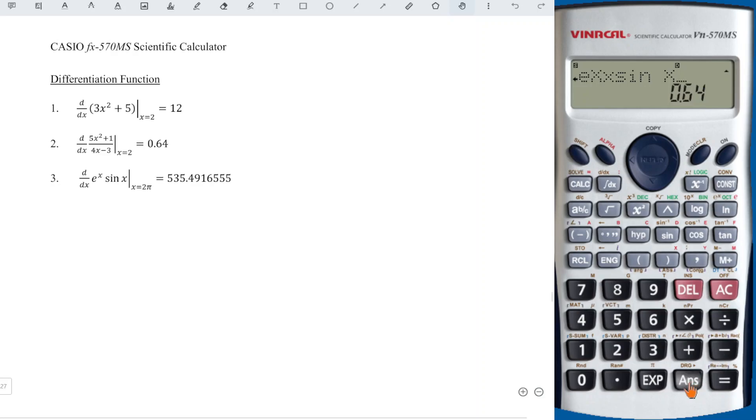Press Shift, answer, and we choose radian number 2. Press comma to input the point. So we have shift exponent, pi. And press equal. Then we will obtain the correct value.